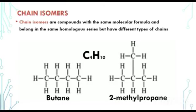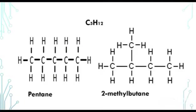Let's look at another example. We have pentane and 2-methylbutane. How many carbon atoms here? 5. What about this side? 5 also. Counting the hydrogen atoms on both sides gives us 12 each. Same molecular formula, but different types of chains.